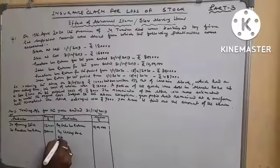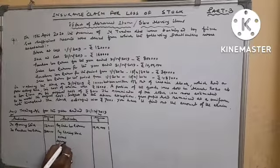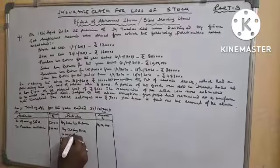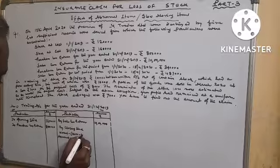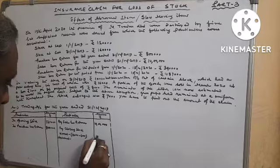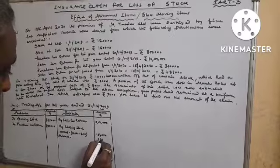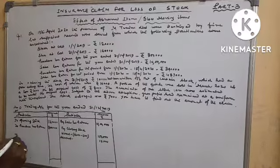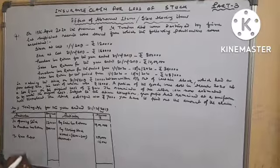Normal, Abnormal. Normal equals to how much? Closing stock given, Rs. 160,000 minus Rs. 6,000. Rs. 154,000. Abnormal given, Rs. 16,000.